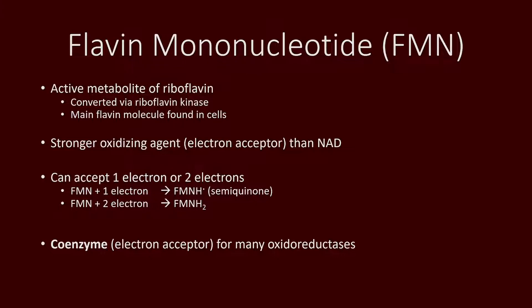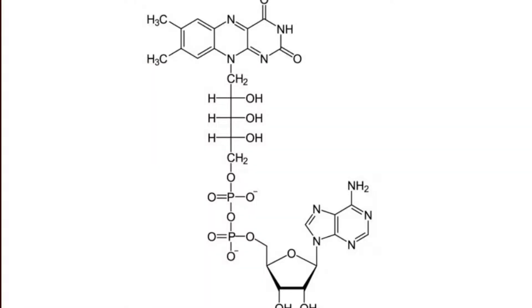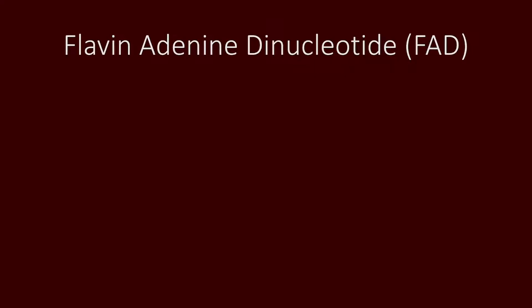FMN acts as a coenzyme for many enzymes collectively known as oxidoreductases. These enzymes participate in redox reactions. Any enzyme that requires a flavin molecule — and there are other flavin-containing molecules in our bodies as well — are known as flavoproteins.